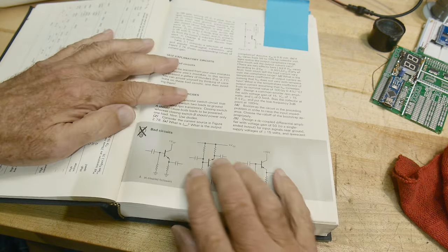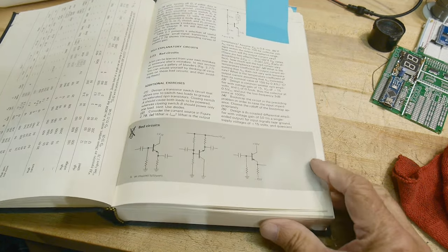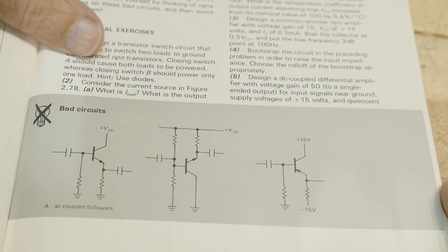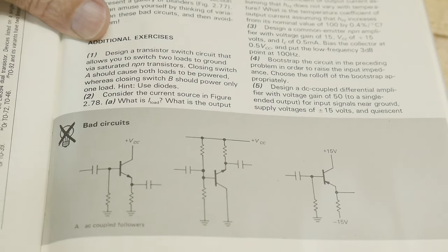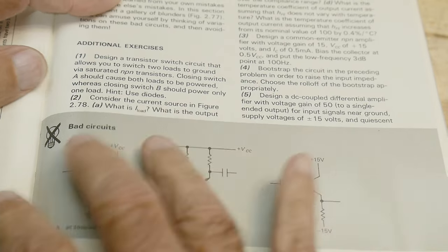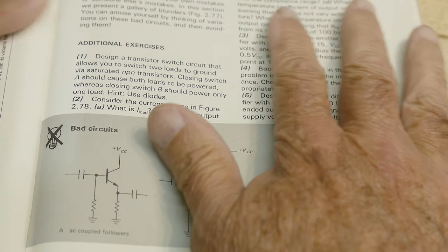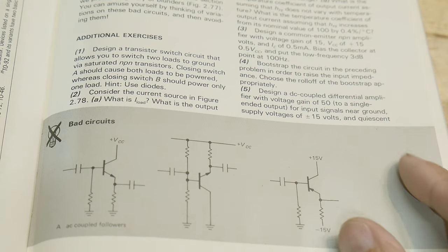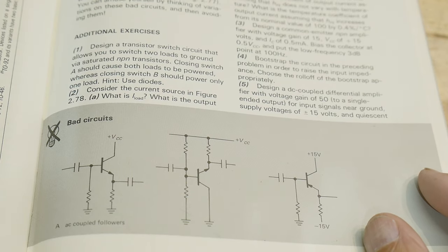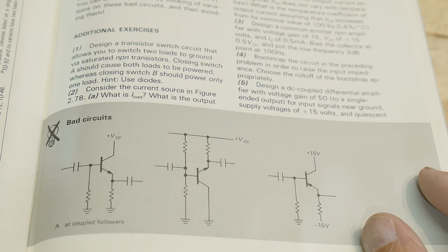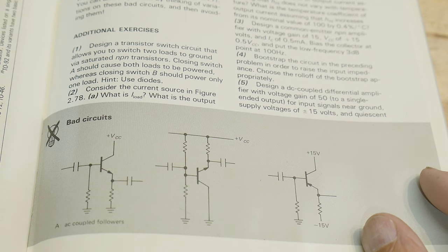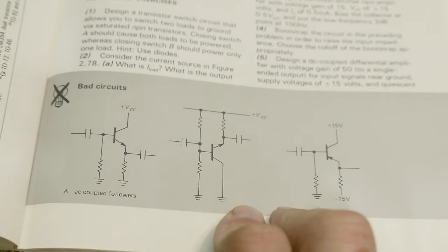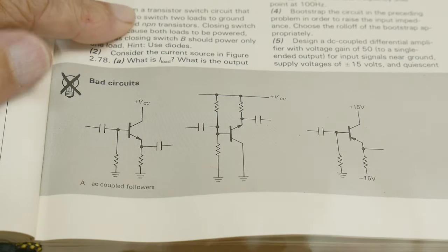I talked about maybe going through some of the bad circuits they have in the book. No, they didn't have all bad circuits. They just put them in there on purpose for you to learn from them. I don't think there is an answers guide to this book. It seems like I came across somebody who actually had done it and wrote something, but I can't find it now. But anyway, we can look at some bad circuits here. So what are wrong with these?